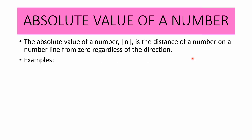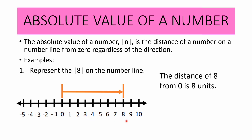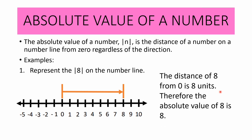Let us have examples so that we can understand more the absolute value of a number. Represent the absolute value of 8 on the number line. Let us study the figure. We graph from zero till eight, and count the number of units from zero to eight. The distance of 8 from zero is 8 units. Therefore, the absolute value of 8 is 8.